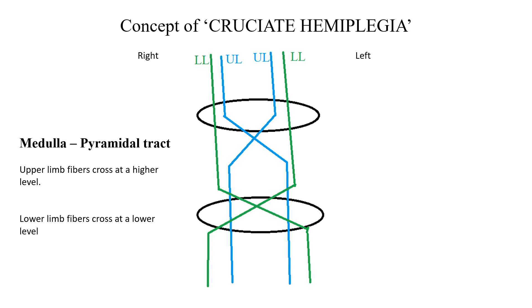In that crossing, we have two types of fibers: upper limb fibers and lower limb fibers. Upper limb fibers are arranged more medially than the lower limb fibers. Upper limb fibers cross at a higher level in the medulla, whereas the lower limb fibers cross at a lower level in the medulla.